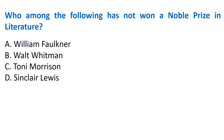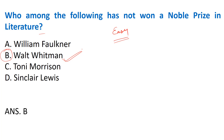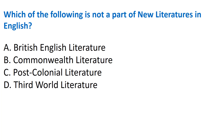The first question on screen: 'Who among the following has not won a Nobel Prize in Literature?' This is an important and easy question from the DSSSB PGT English 2021 July paper. Options: A) William Faulkner, B) Walt Whitman, C) Toni Morrison, D) Sinclair Lewis. The correct answer is Option B - Walt Whitman, known as 'the bard of America.' Walt Whitman did not receive the Nobel Prize in Literature, whereas Faulkner, Morrison, and Lewis all did.